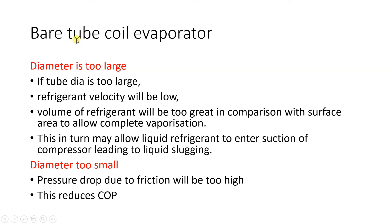Regarding the diameter of bare tube evaporators: if the diameter is too large, using the mass flow rate formula ṁ = ρAV, with constant mass flow rate an increase in area means the velocity reduces. So refrigerant velocity will be low, and the volume of refrigerant will be too great relative to surface area to allow complete vaporization. This may allow liquid refrigerant to enter the compressor suction, leading to liquid slugging. If the diameter is too small, the frictional pressure drop will be too high, reducing the COP.